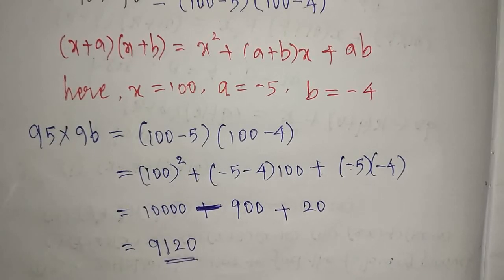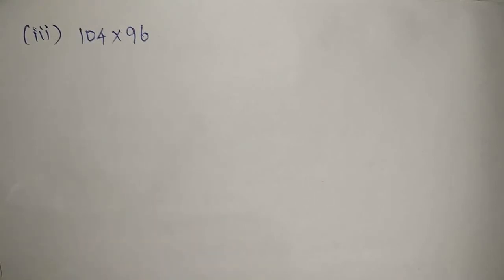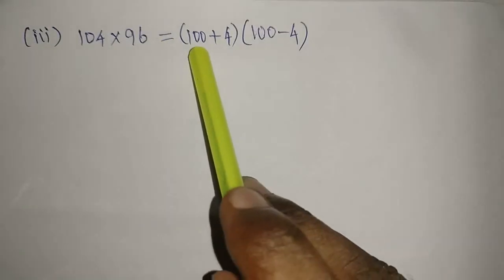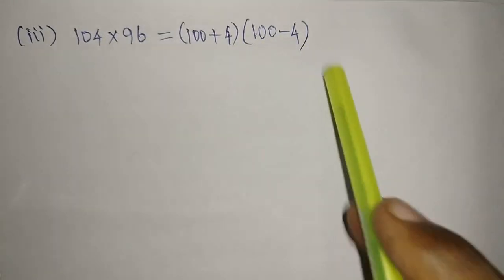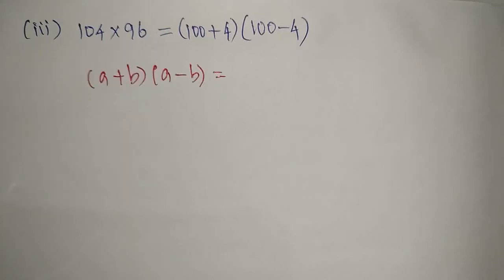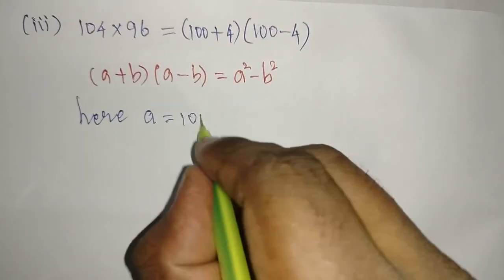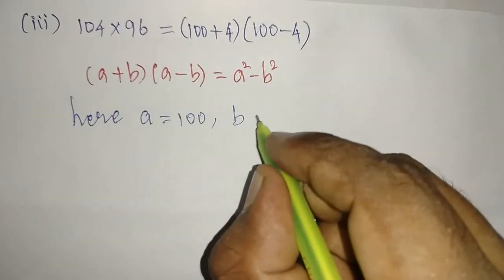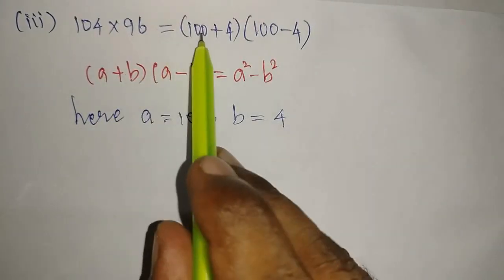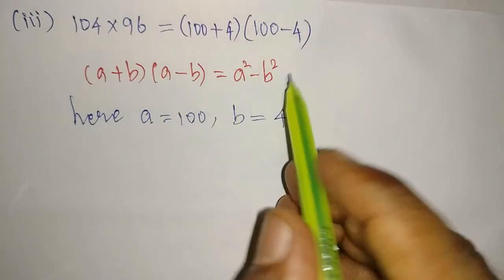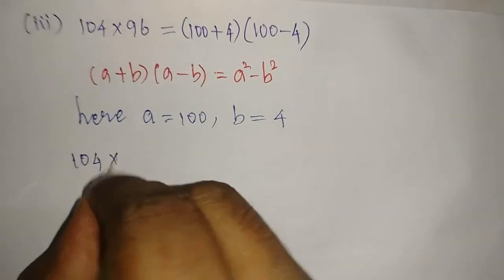Now we will go to the third one: 104 into 96. The 104 I am going to write as 100 plus 4, and 96 as 100 minus 4. Now this is in the form of a plus b into a minus b, so the formula I am going to use is a plus b into a minus b equals a squared minus b squared. Here the value of a is 100 and b is 4.